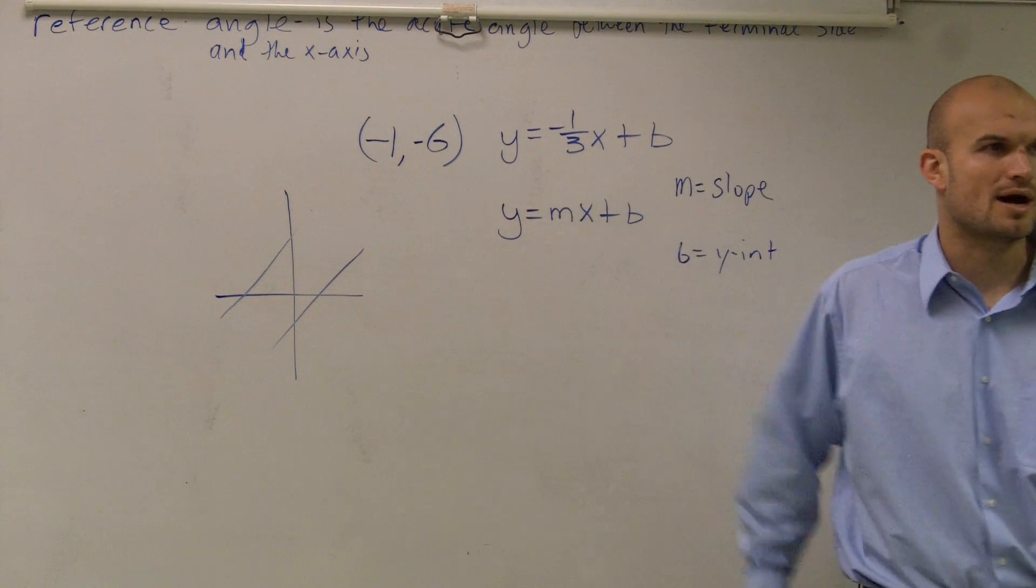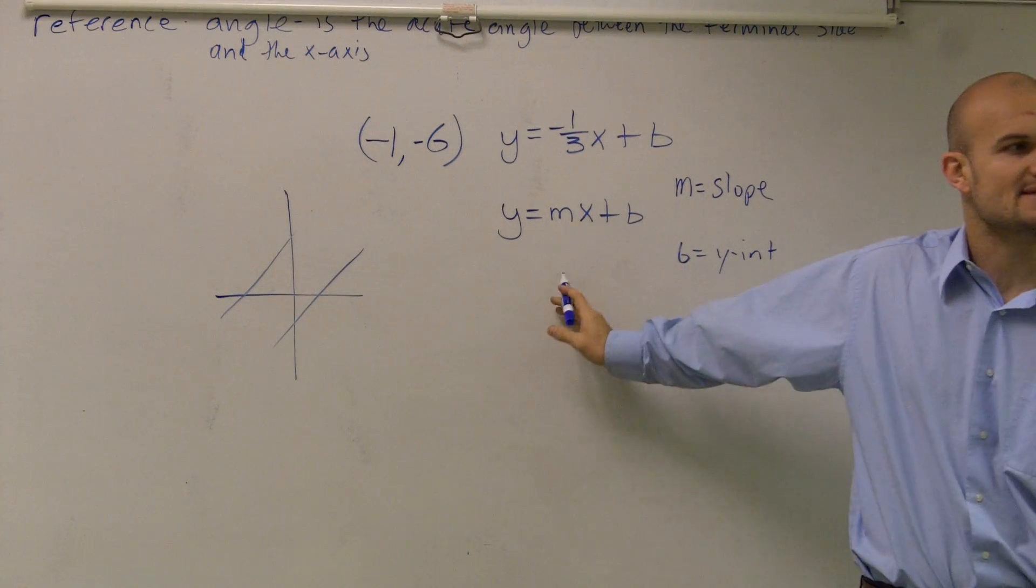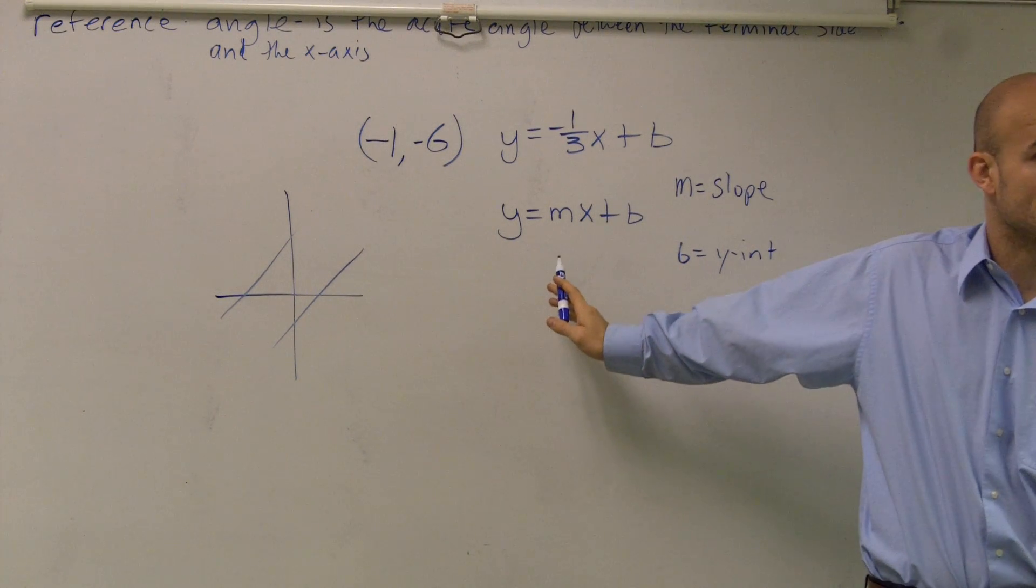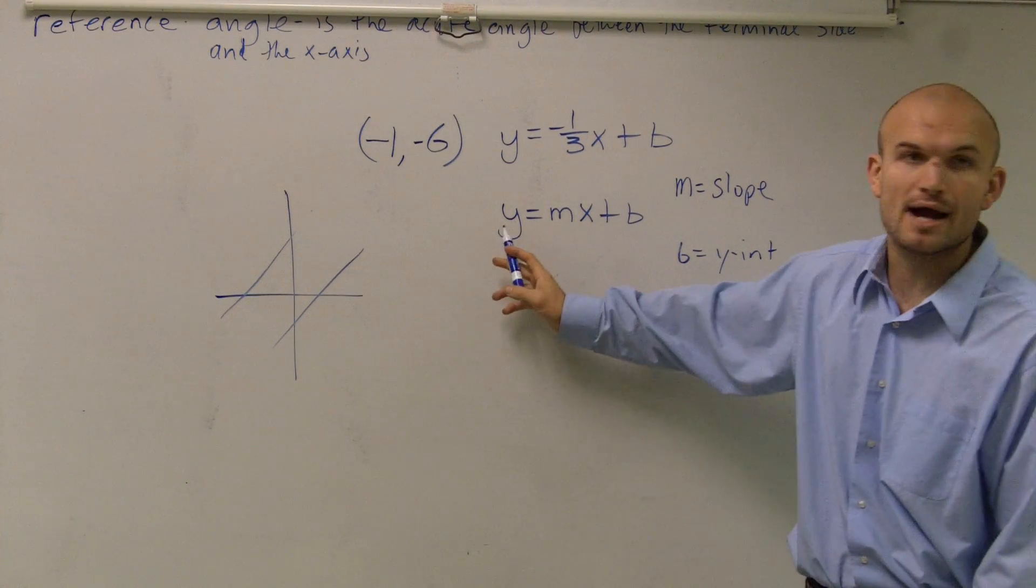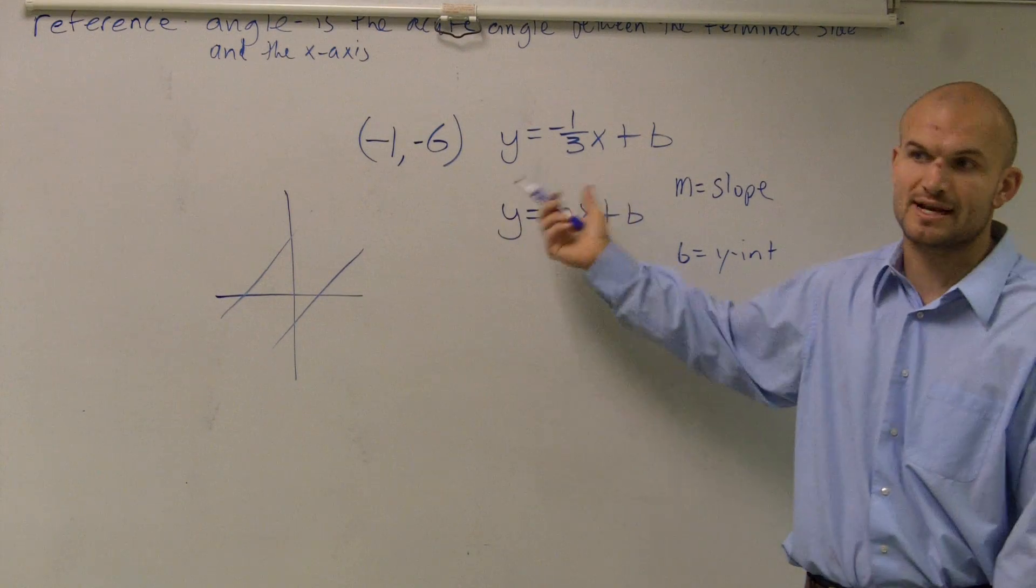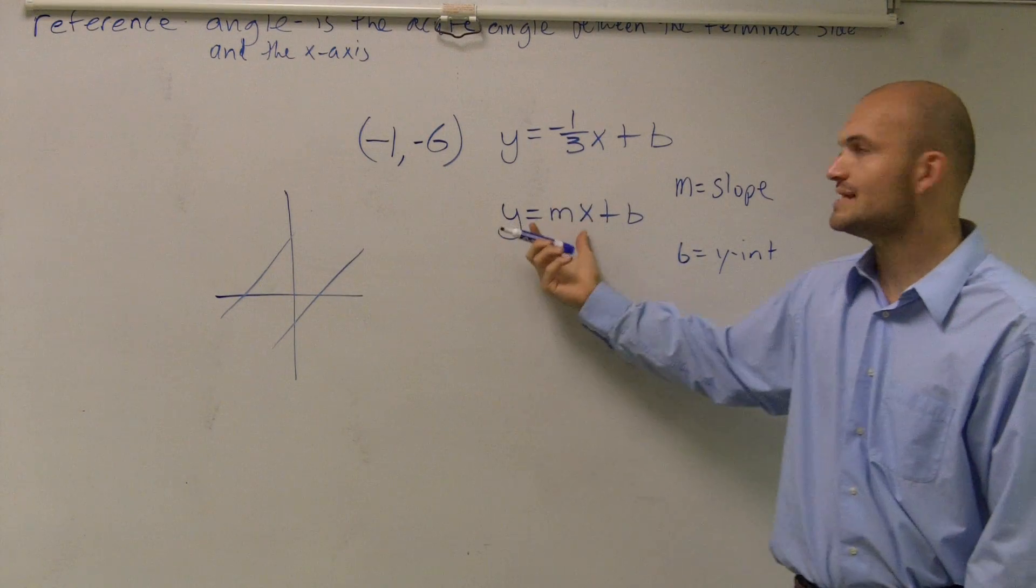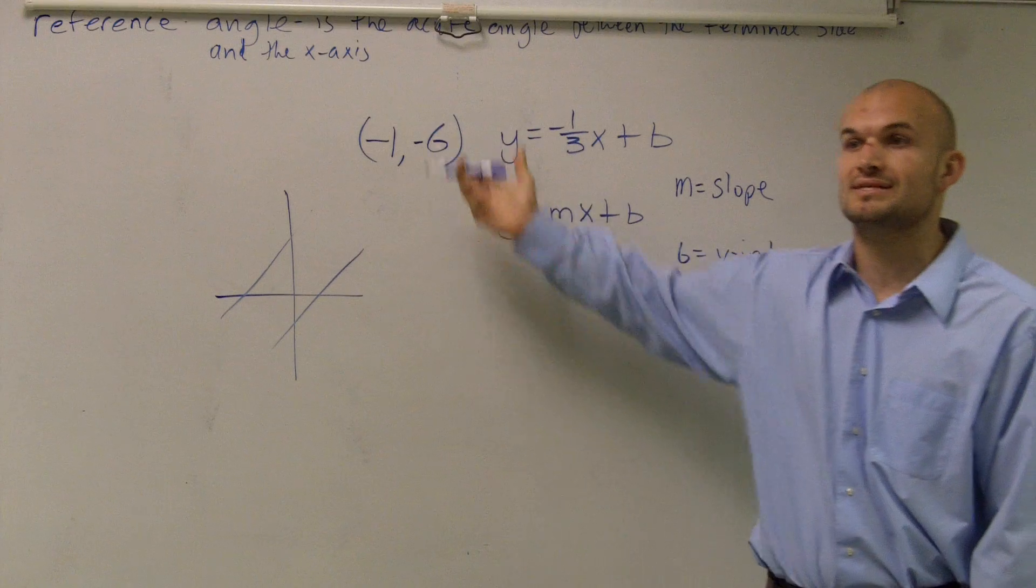Now a lot of you might say, well, what are X and Y? X represents any X coordinate of a point on a line, and Y represents any Y coordinate of any other point on a line. So these X and Y's represent a point on the line.